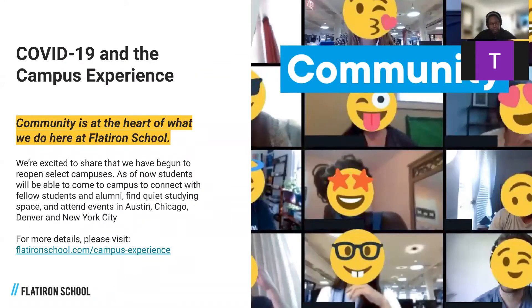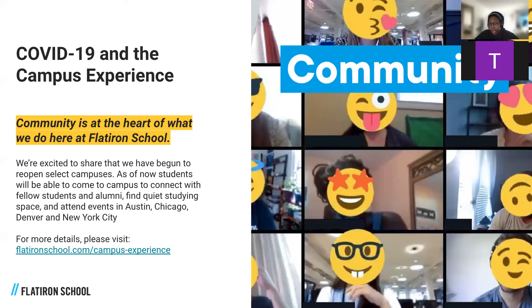Let's quickly go over COVID-19 and the campus experience. Community is at the heart of everything we do at Flatiron School, and we're excited to share that we've started to open back some of our campuses. Right now, Chicago, Denver, Colorado Springs, and New York City are open for events, studying, and meeting cohort mates. New York City just piloted its first on-campus cohort in almost two years in October. In January, both New York City and Denver will be offering software engineering and data science back on campus, with a slow rollout to other campuses. You can learn more at flatironschool.com/campus-experience.